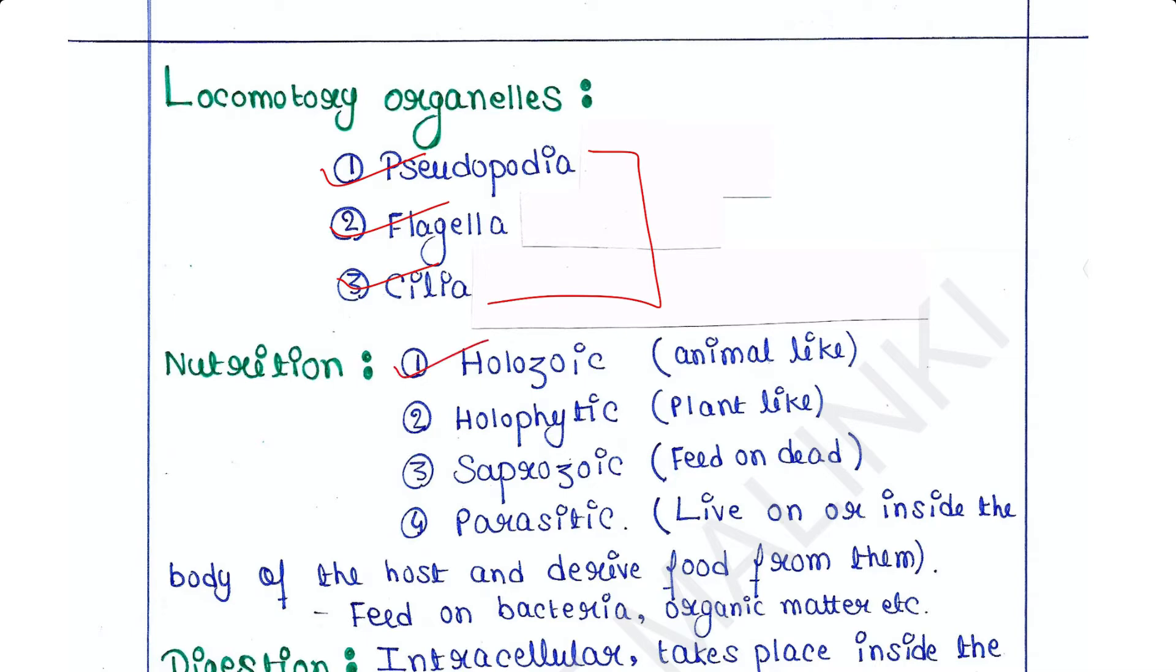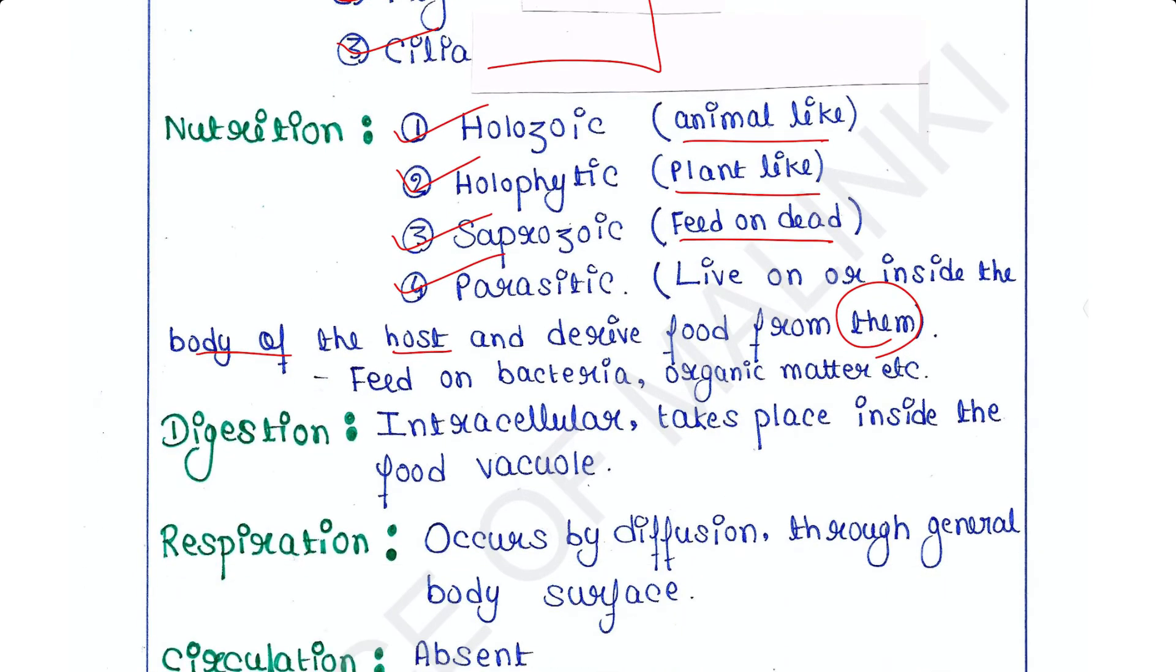Nutrition: they have different types. Holozoic nutrition is animal-like nutrition. Holophytic nutrition is plant-like nutrition. Saprozoic nutrition means they feed on dead materials. Parasitic means they live on or inside the body of the host and derive food from the host. They feed on bacteria, organic matter, etc.